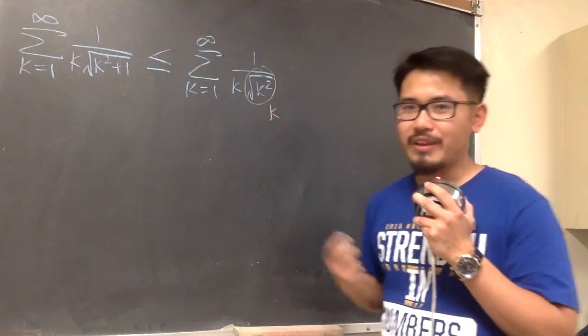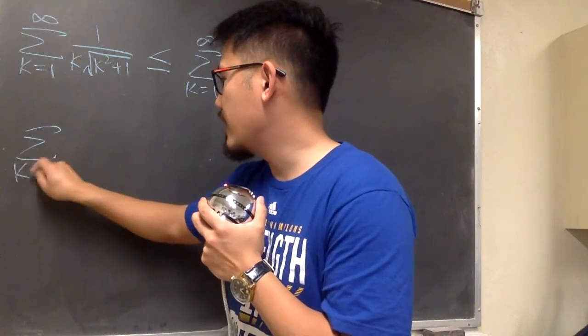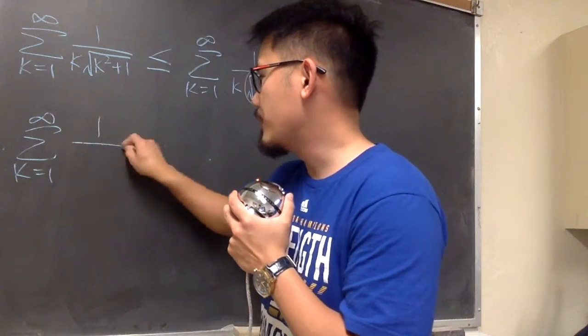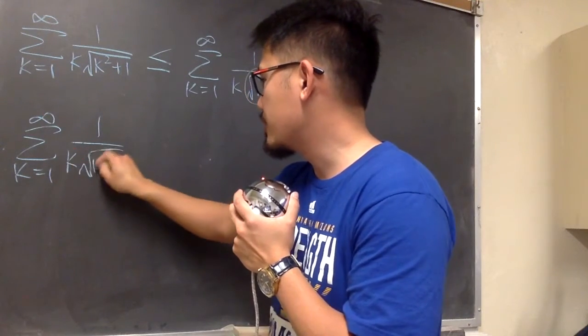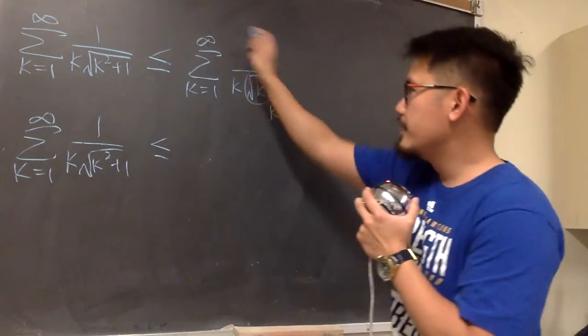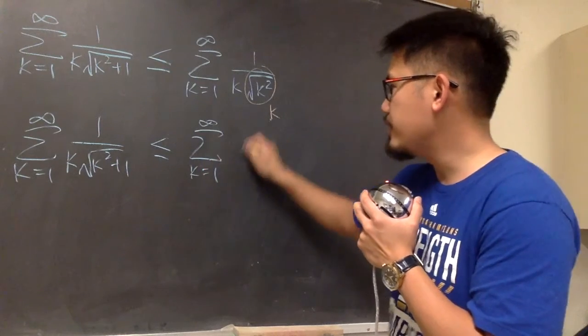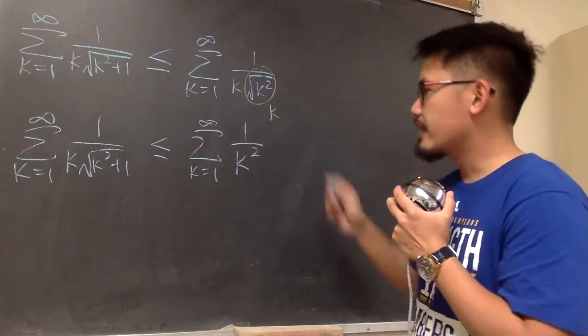So we can say, this is sigma when k goes from 1 to infinity, and then I'm just going to write down the original again right here. And we can say this is less than or equal to, this is just the sigma when k goes from 1 to infinity, 1 over k squared.